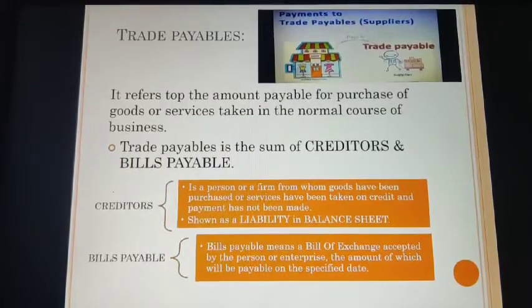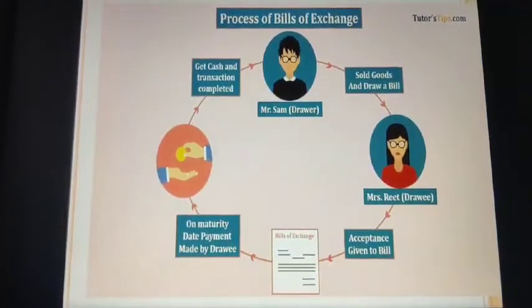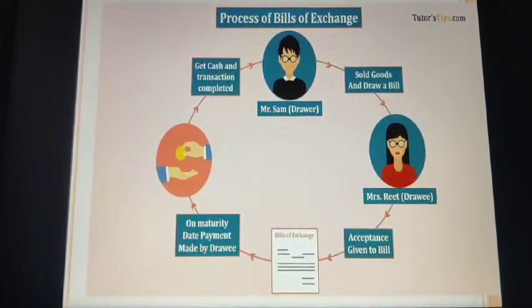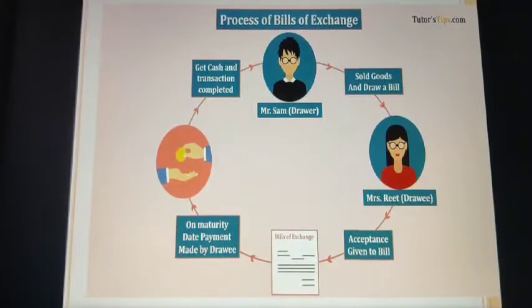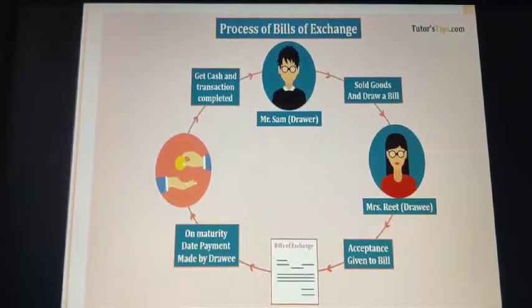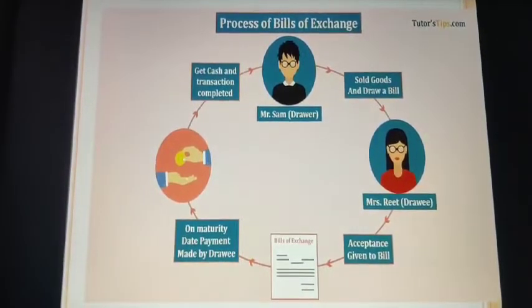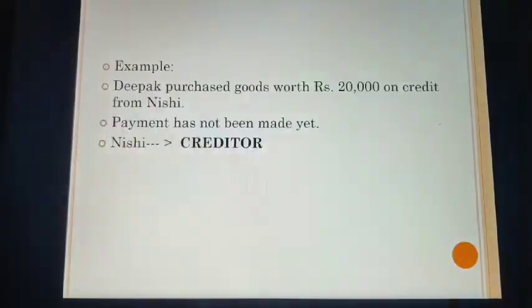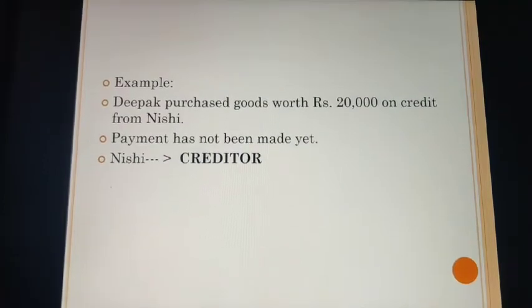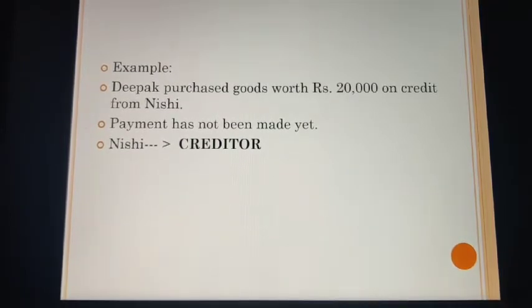Yesterday we discussed that Mr. Sam sold goods and drew a bill. Mrs. Reeth accepted that bill. Now for Mr. Sam that was bills receivable, and for Mrs. Reeth that bill becomes bills payable because in future she will be paying that amount to Mr. Sam. Next example: Deepak purchased goods worth rupees 20,000 on credit from Nishi. Payment has not been made yet, thus Nishi becomes Deepak's creditor.